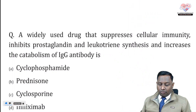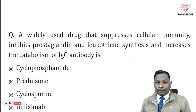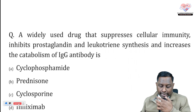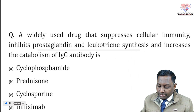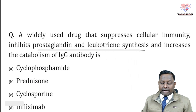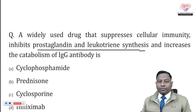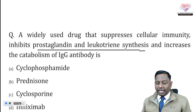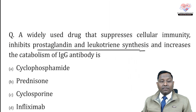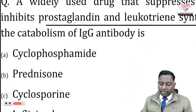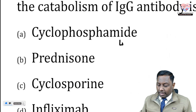The very first question is about a widely used drug that suppresses cellular immunity, inhibits both prostaglandin and leukotriene synthesis, and increases the catabolism of IgG antibody. There's a lot of information here. The options are cyclophosphamide, prednisolone, cyclosporine, and infliximab.